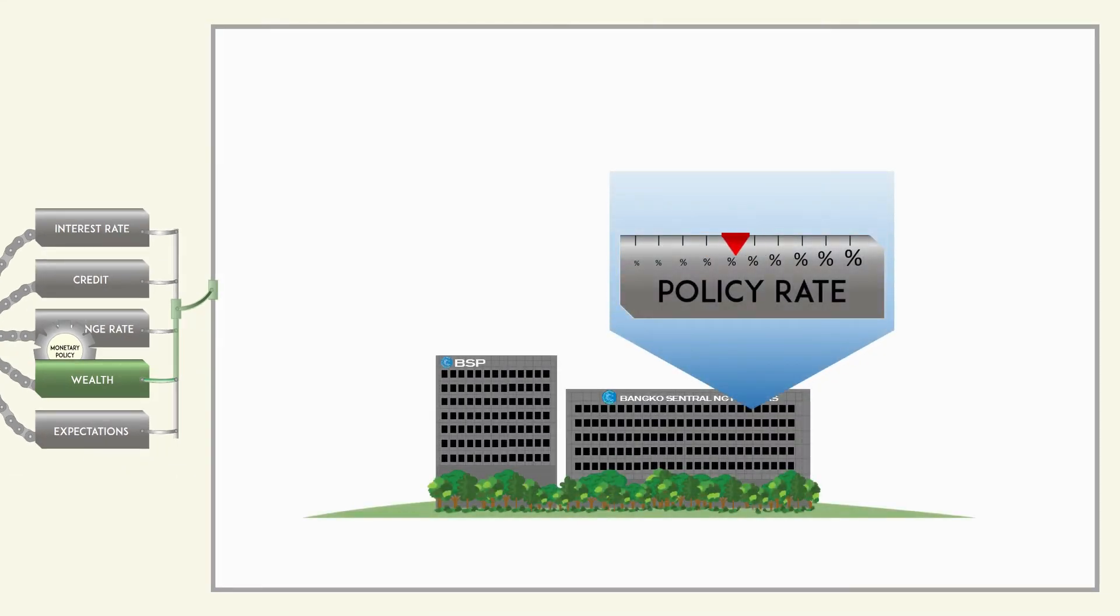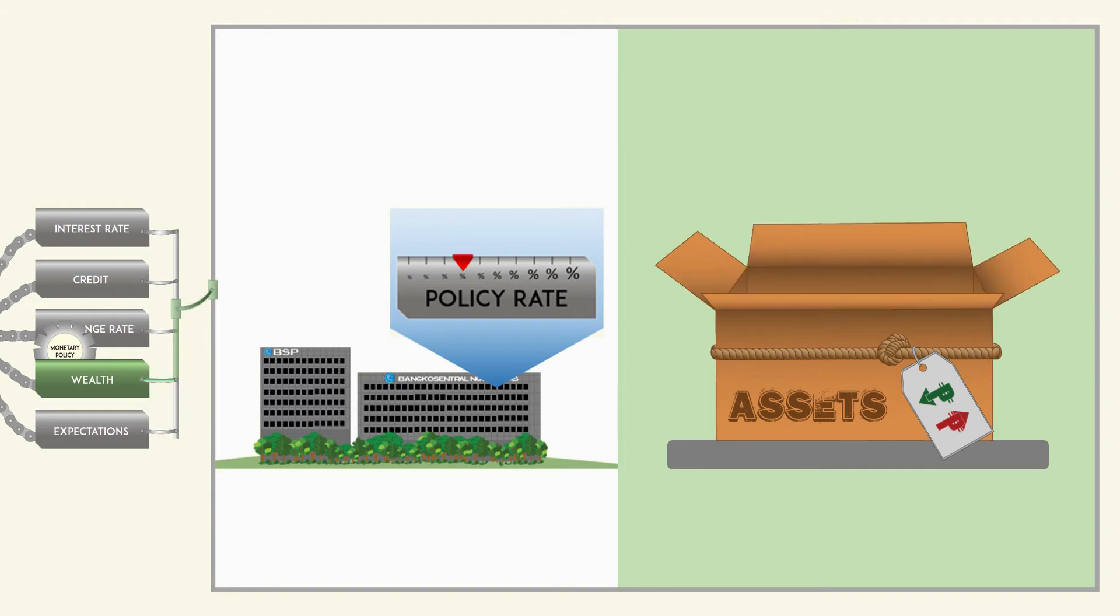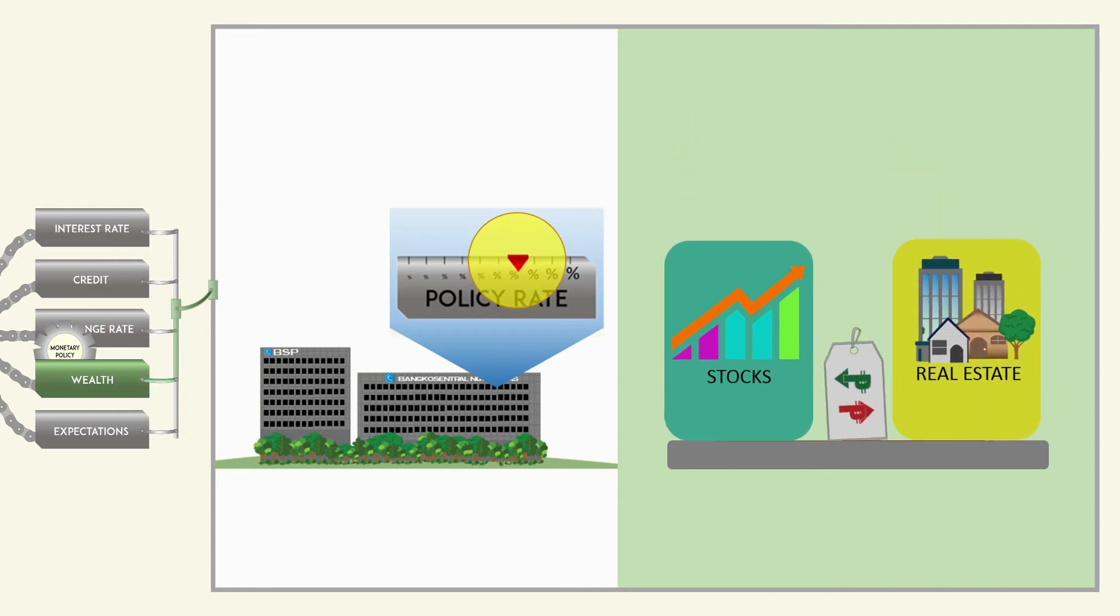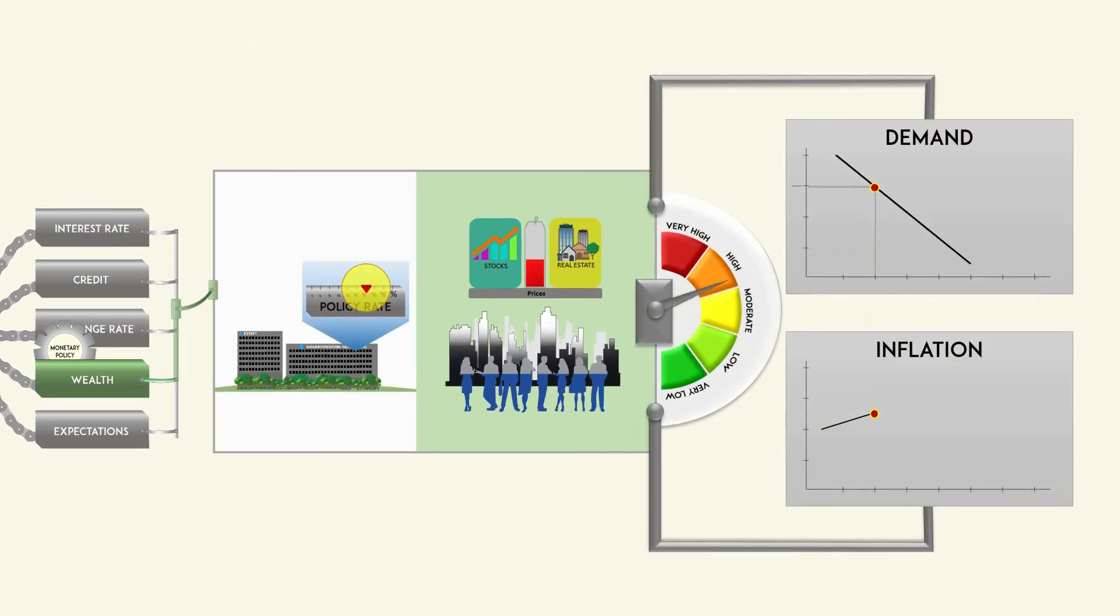A change in the BSP's policy rate affects the prices of assets such as stocks and real estate. An increase in the BSP's policy rate will reduce the present value of future income from these assets and their prices go down accordingly. Lower asset prices reduce the wealth of owners, which will moderate demand and inflation.